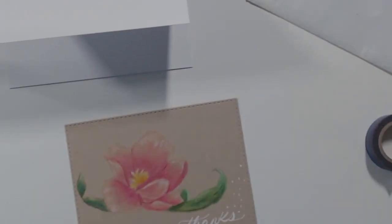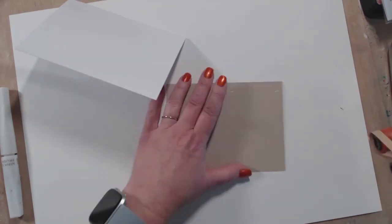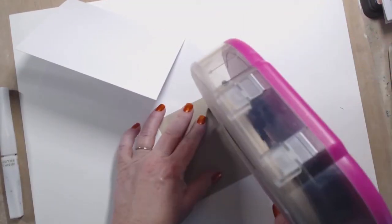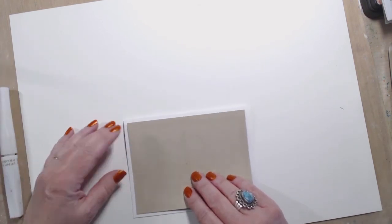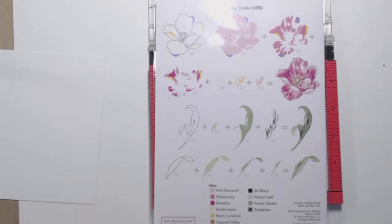Now I'm going to put some adhesive on the back of that front. Then I'm going to glue it to the front of an A2 size card. I like to turn it upside down just to figure out where it's going to go.